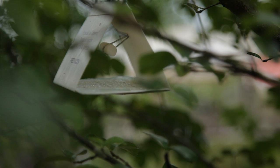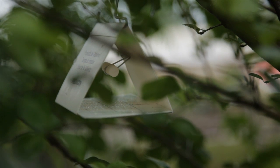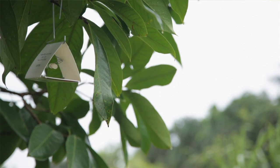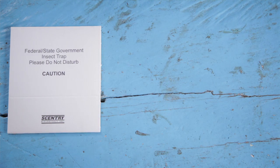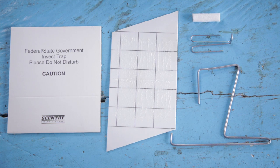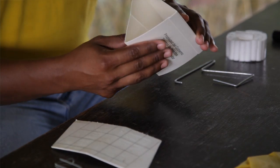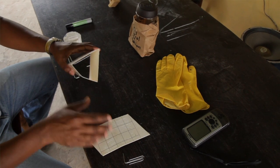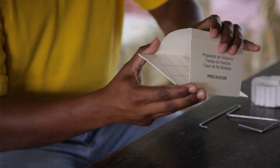The surveillance activities include the use of a Jackson trap. This trap is a very simple trap used in determining the presence of the carambola fruit fly. It's made up of a delta-shaped cardboard body, an insert, a wick, a wick holder, and a metal hanger. To assemble the Jackson trap, we first have to unfold the delta-shaped plastic cardboard body. Then we insert the sticky pad to the bottom of the trap.